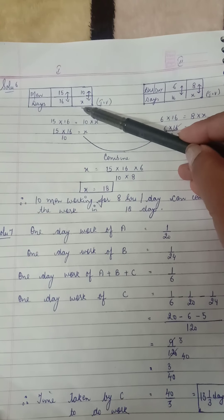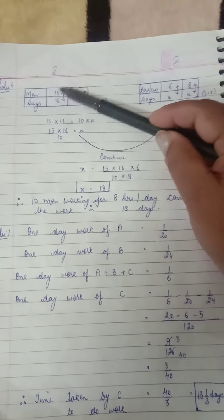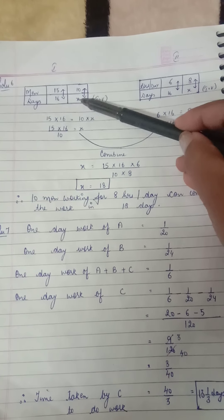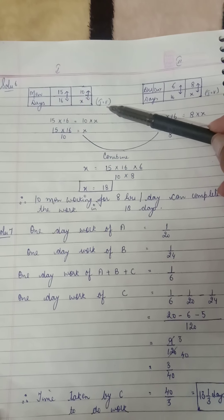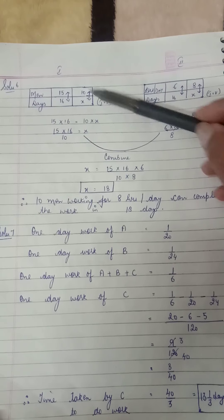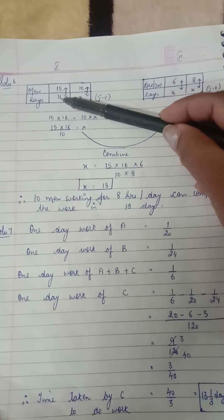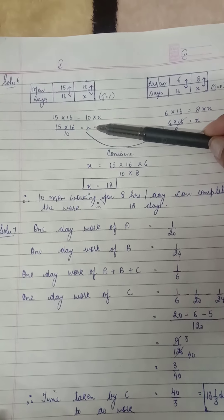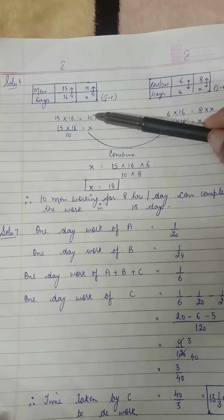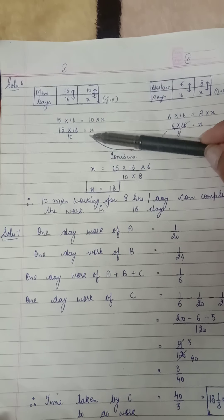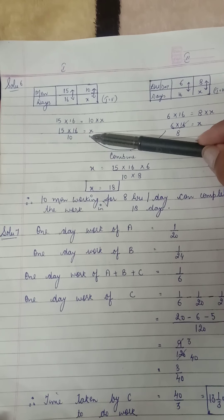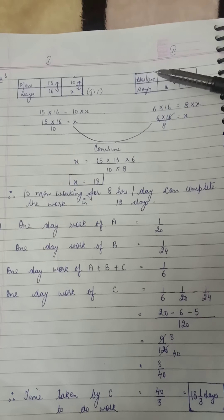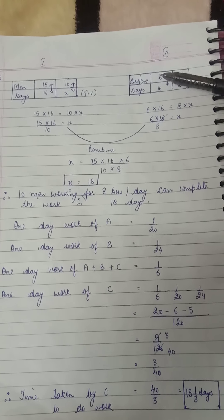Men are decreasing, so if a lesser number of men have to do the work, obviously they'll take more time. That's inverse variation, and for inverse variation we do straight multiplication: 15 into 16 is equal to 10 into x. Keeping x here and taking whatever is with x to the other side, we'll keep it as equation number one.